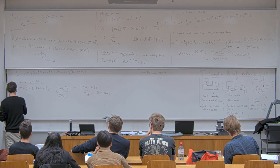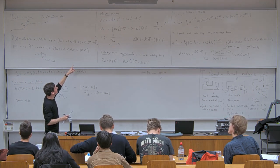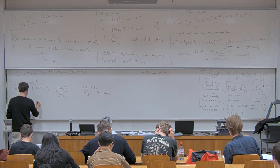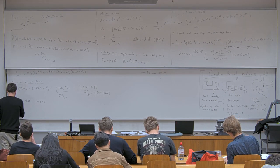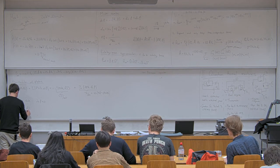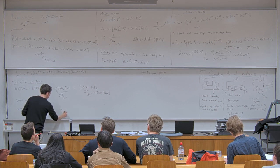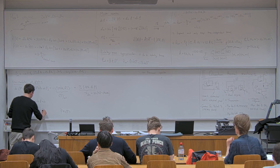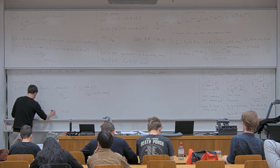Now we assume we have a steady state: if we wait long enough, the density matrix tends to a steady state, so the time derivative of the density matrix goes to zero. We can put the left-hand side to zero, and then we find directly that the heat current Q̇_H is given by ω_H divided by 2eV times the power P. In a very similar calculation, one can calculate that the heat current associated to the cold bath is given by a corresponding expression.